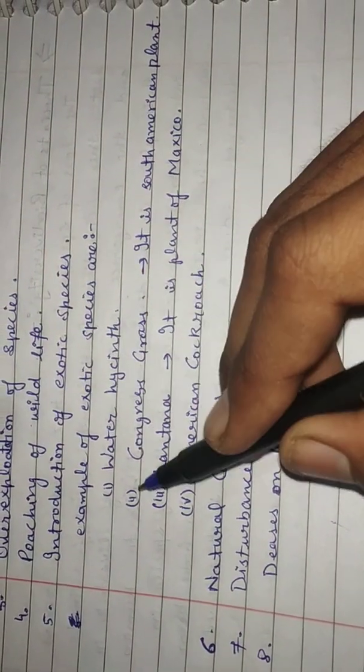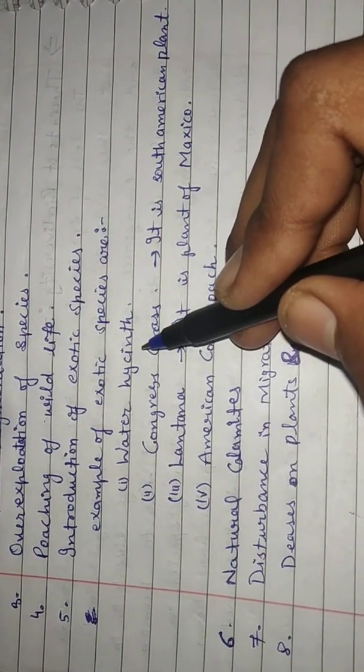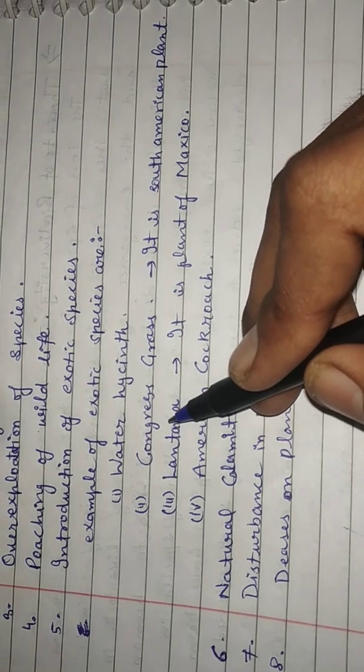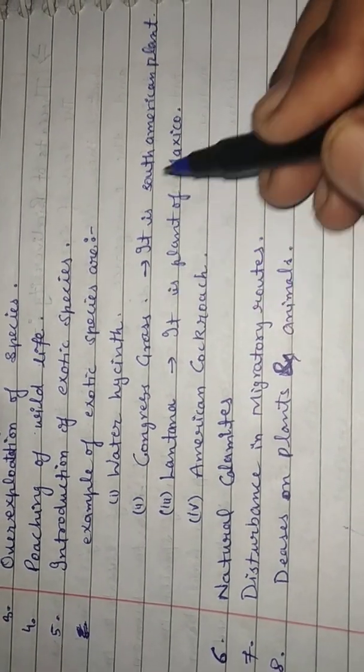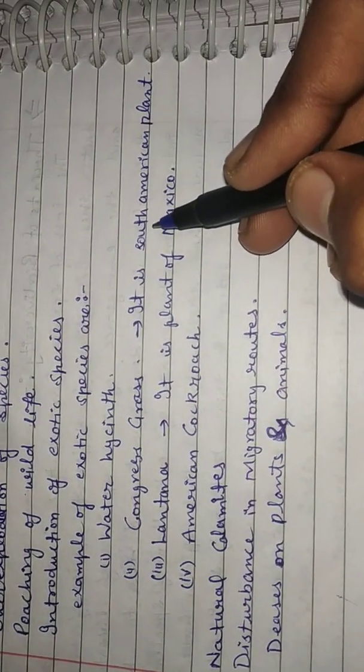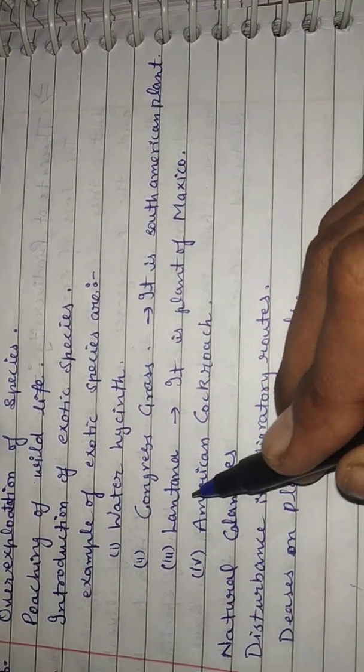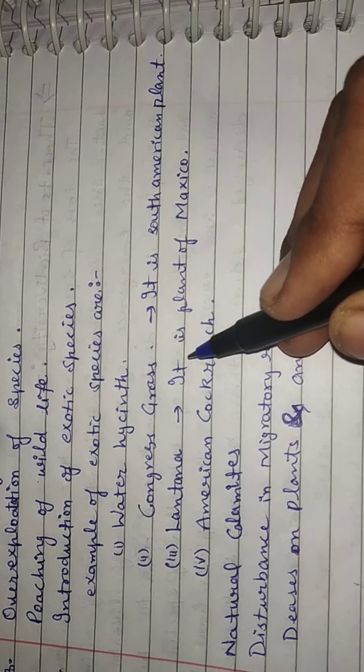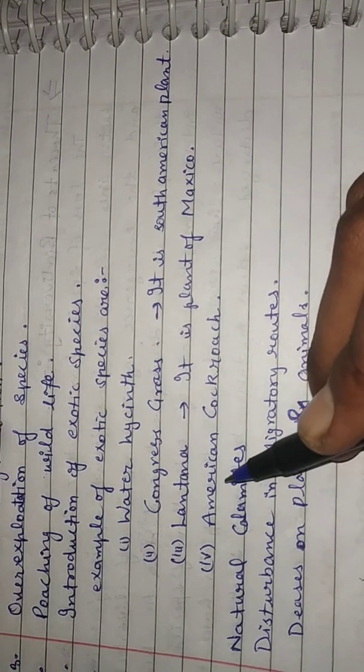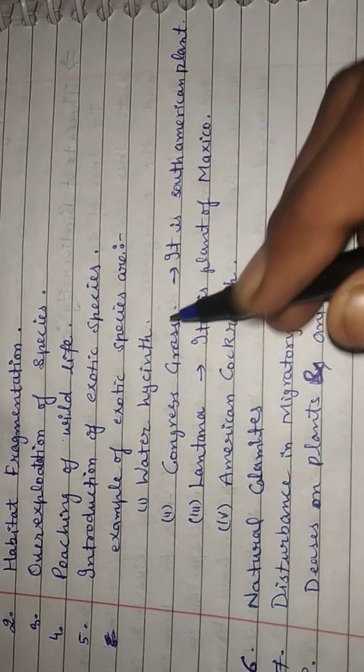introduction of exotic species. Examples of exotic species are water hyacinth and congress grass from South American plant, lantana, it is the plant of Mexico and American cockroach.